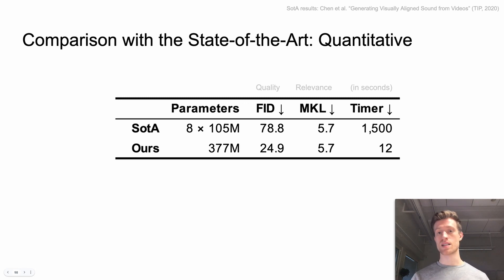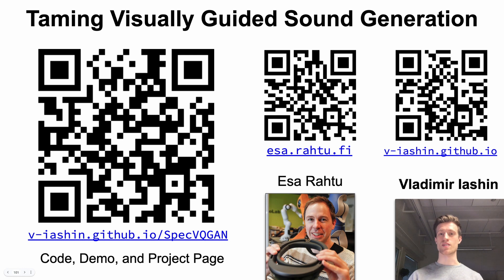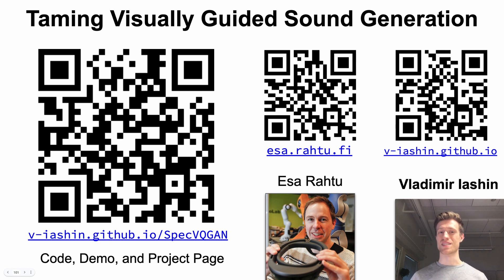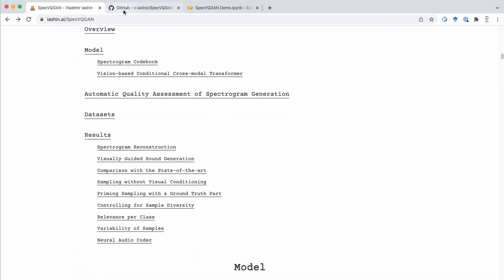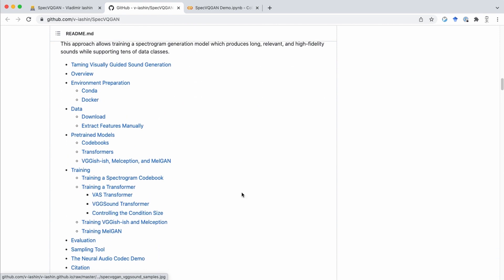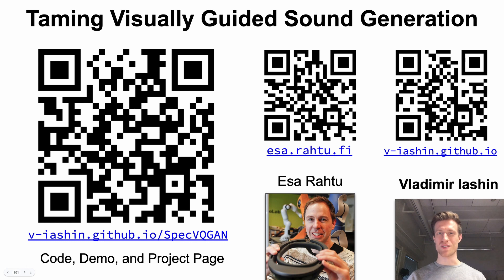In addition, even though a single baseline model has fewer parameters, we need to train eight separate models to cover all classes in the dataset. In this work, we suggest a novel method for visually guided sound generation, a perceptual loss for spectrograms, and automatic metrics for evaluation of relevance as well as fidelity. Check out our interactive project page for more samples, links to the code with pre-trained models, and Google Colab demos including generation and neural audio codec. Thank you so much for watching and I hope you will have a great day.